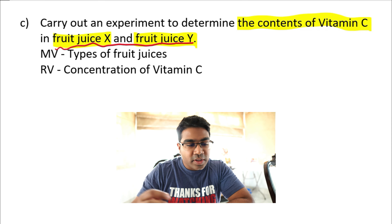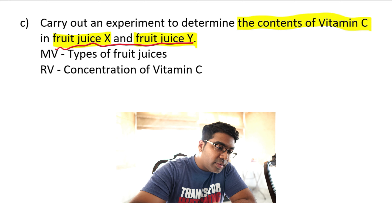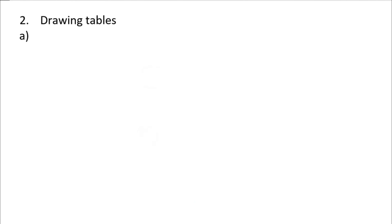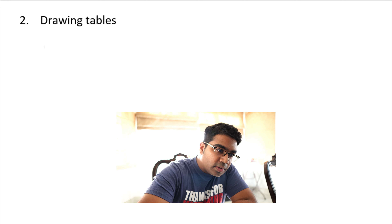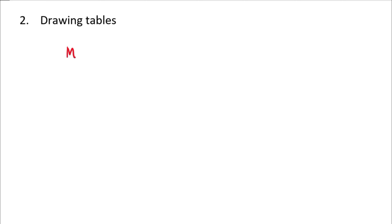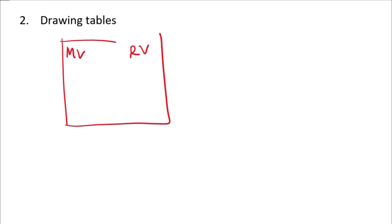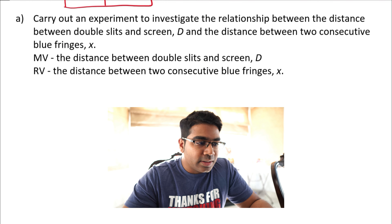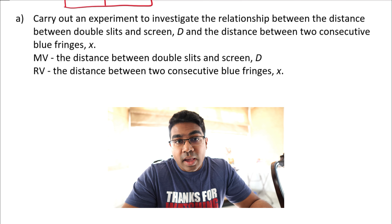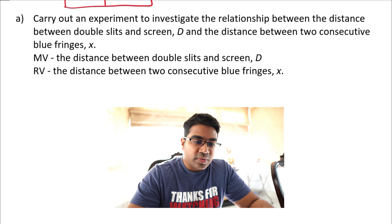Using the MV and RV, we can go on to other parts of the experiment. Let's look at number two: how to draw tables. Generally, the table's first header will be the manipulated variable and the second will be the responding variable. From the physics question, we know the MV is the distance between the double slits and screen, and the RV is the distance between two consecutive blue fringes.